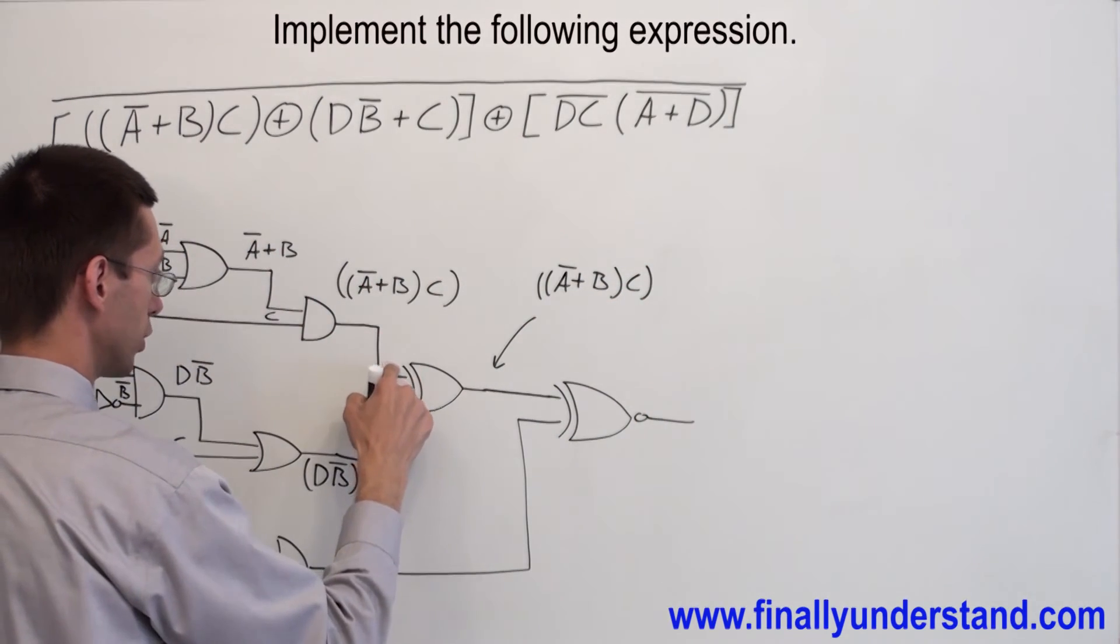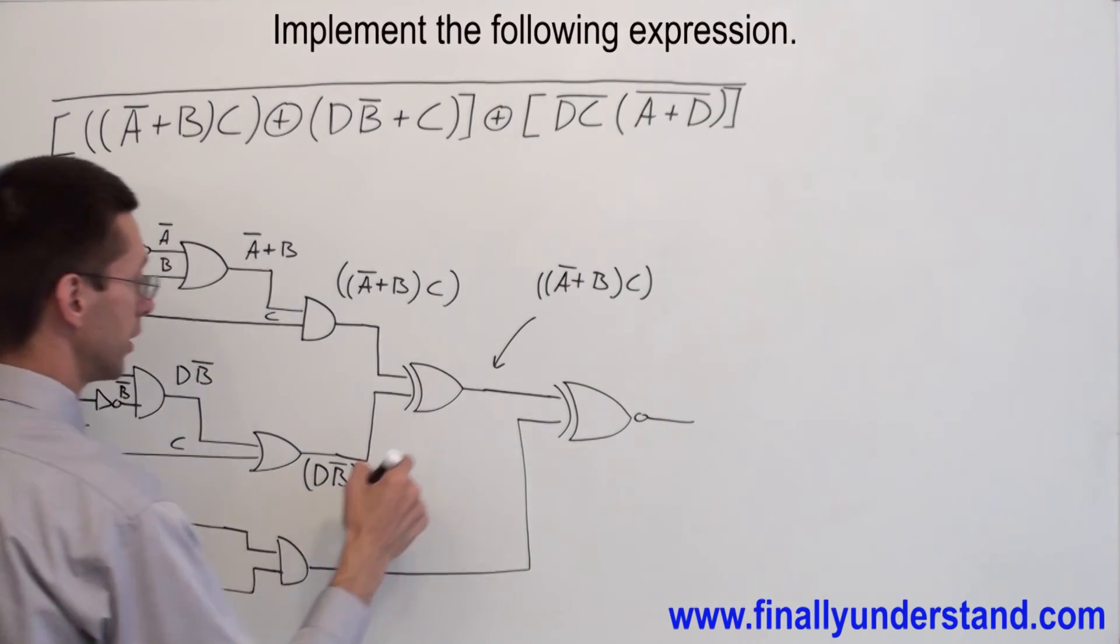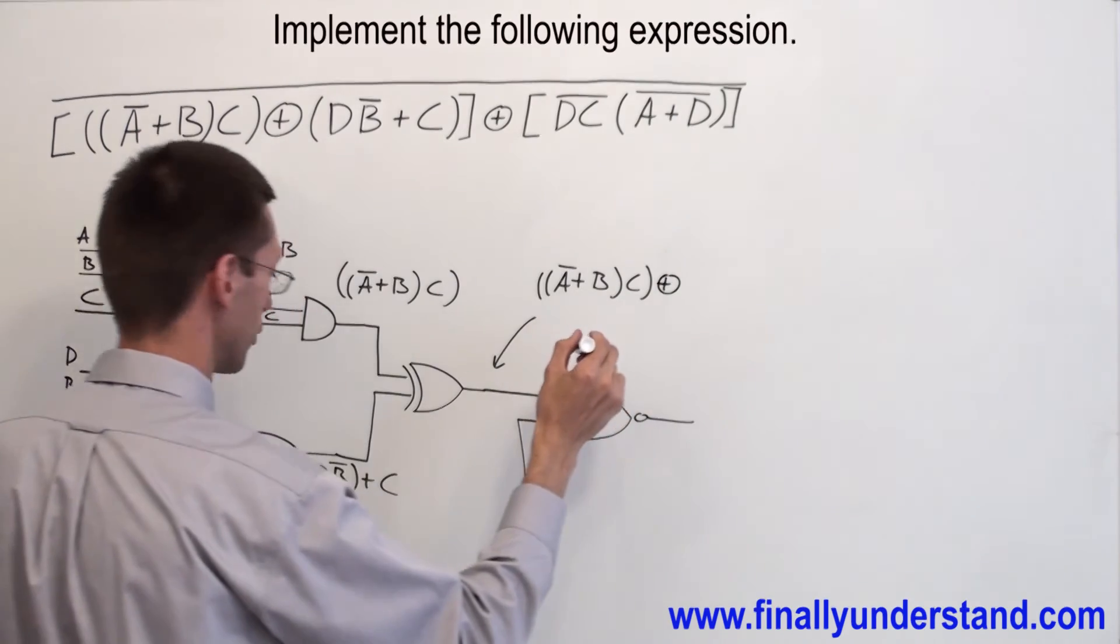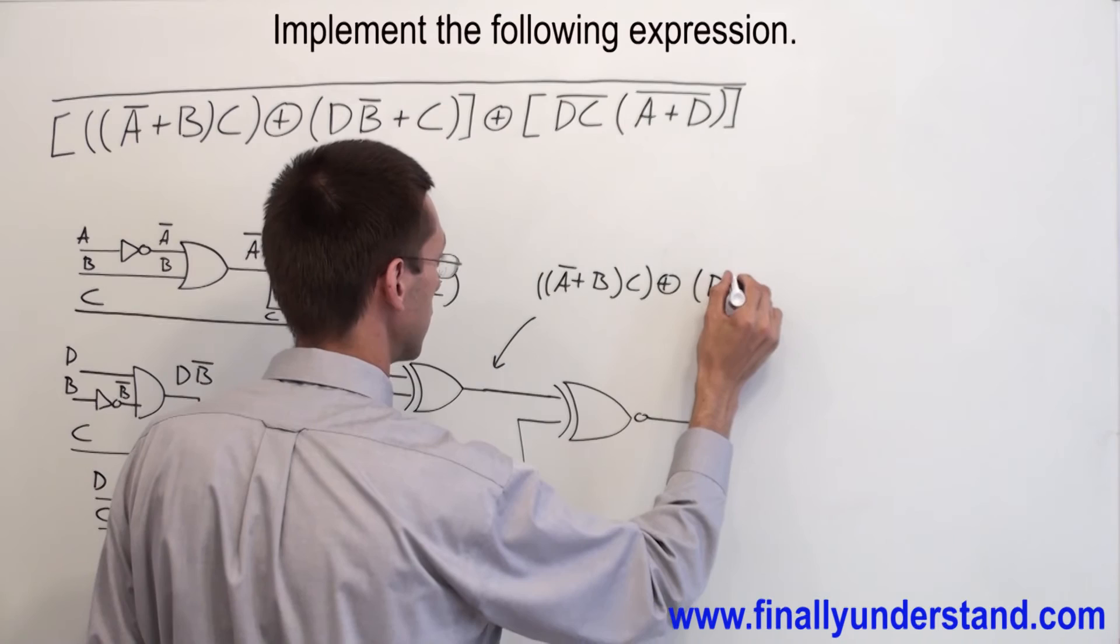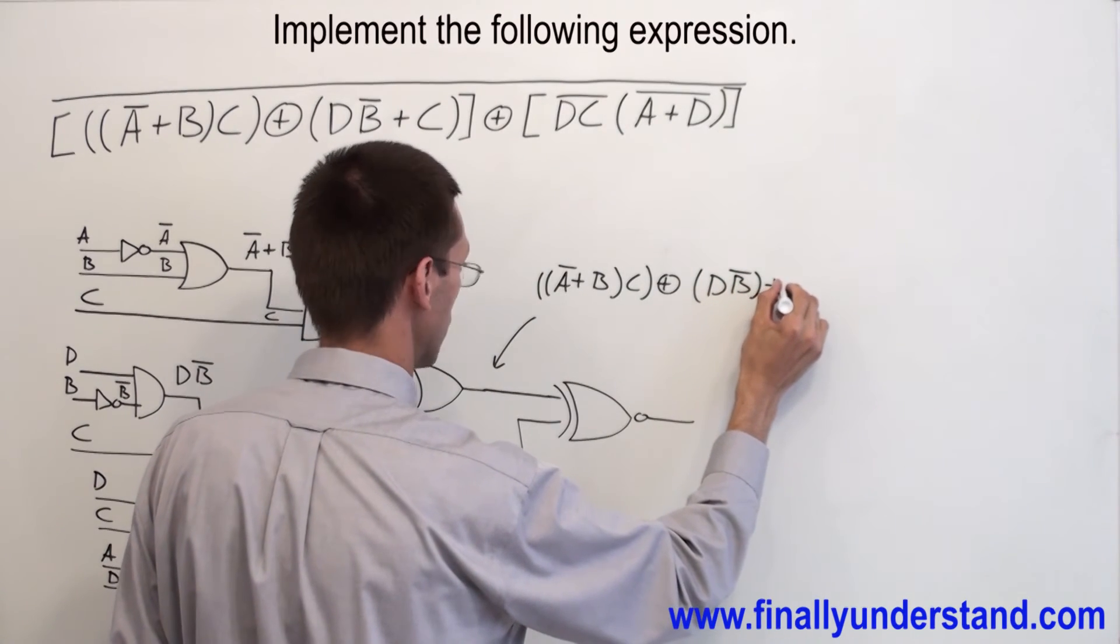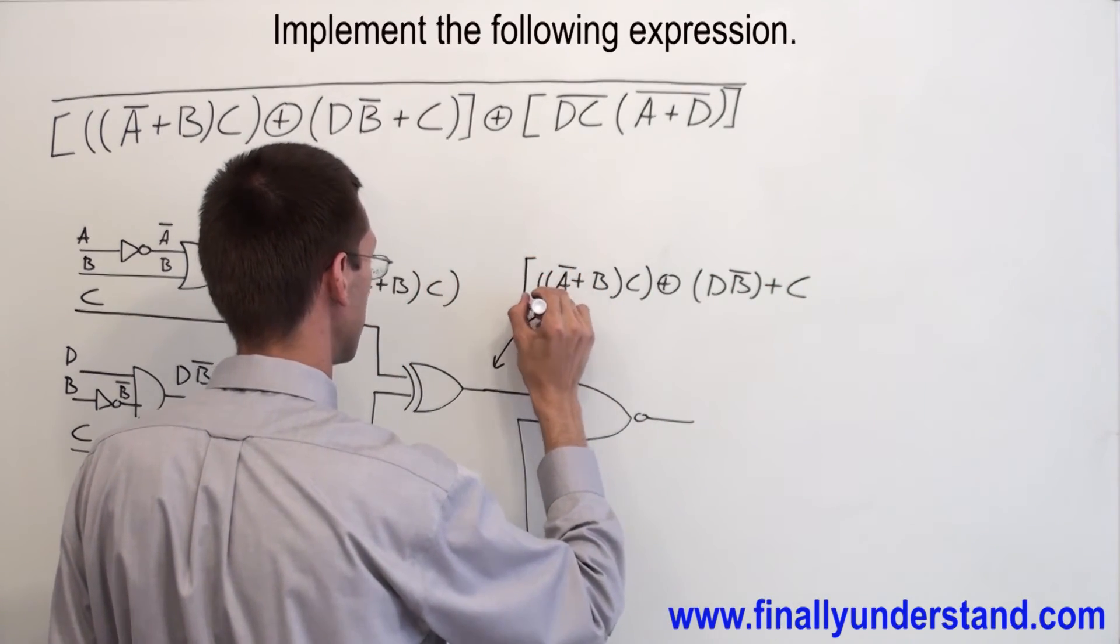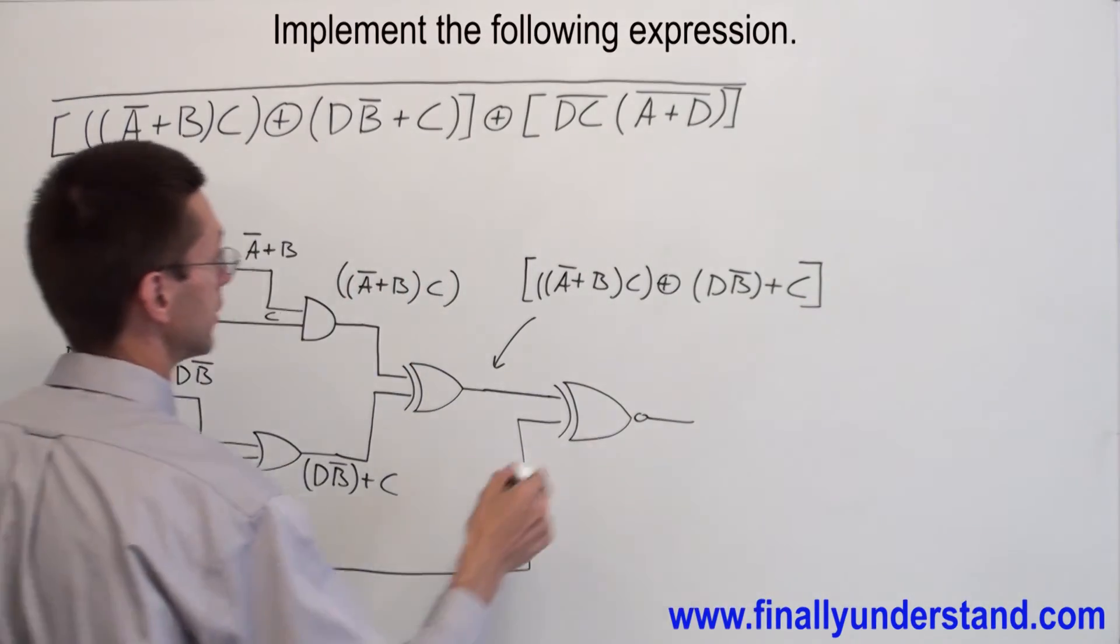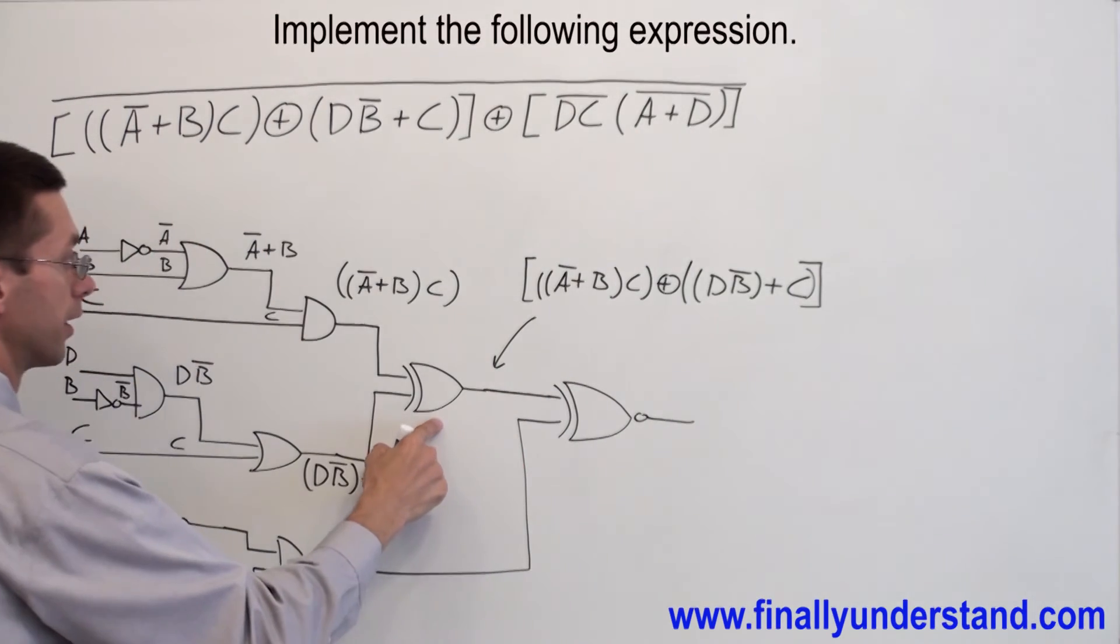Whatever is on the first input, exclusively ORed with whatever is on the second input. I'm going to have exclusive OR, open parenthesis, D, B bar or C. I got this at the output of the exclusive OR. Now we can add parenthesis over here to make this simple.